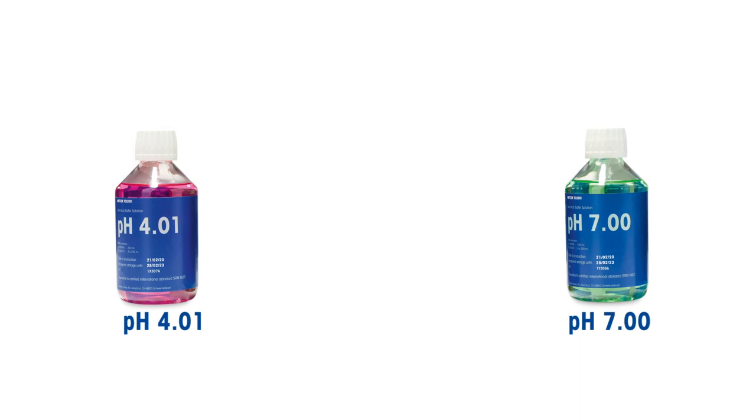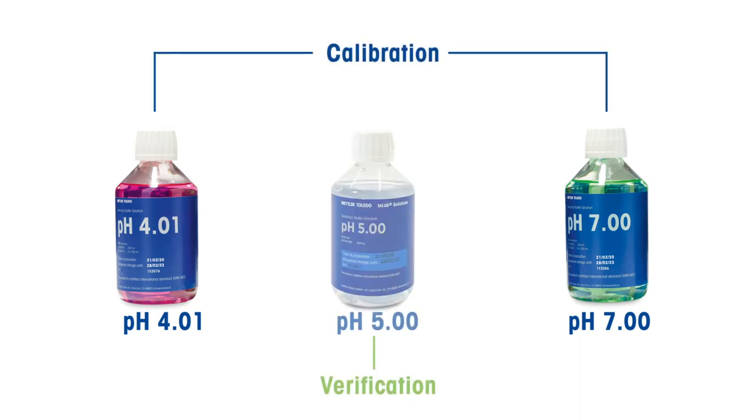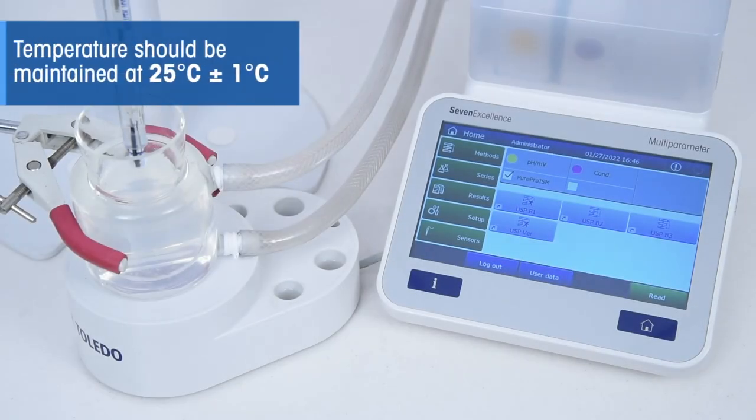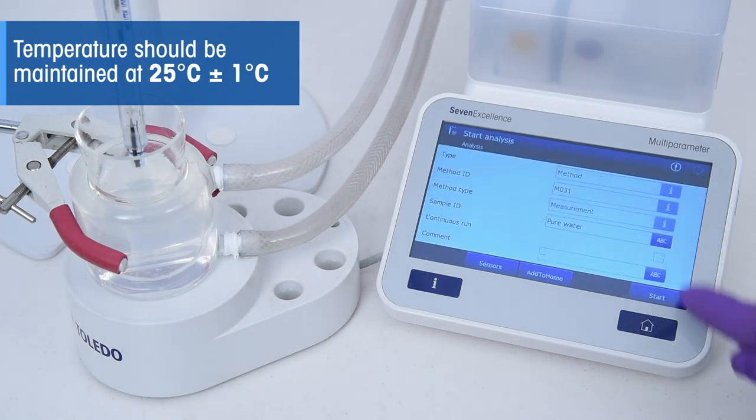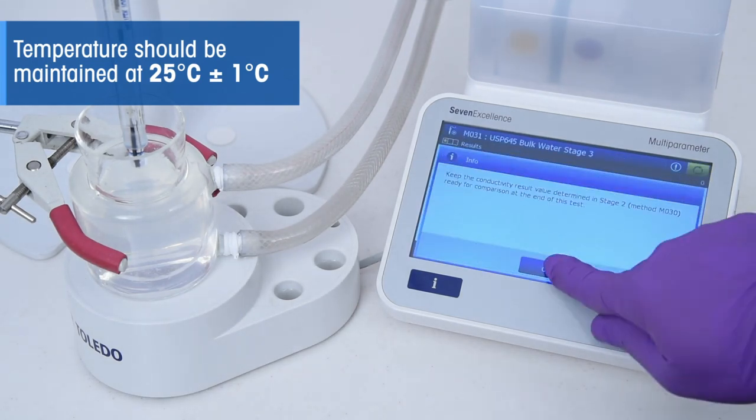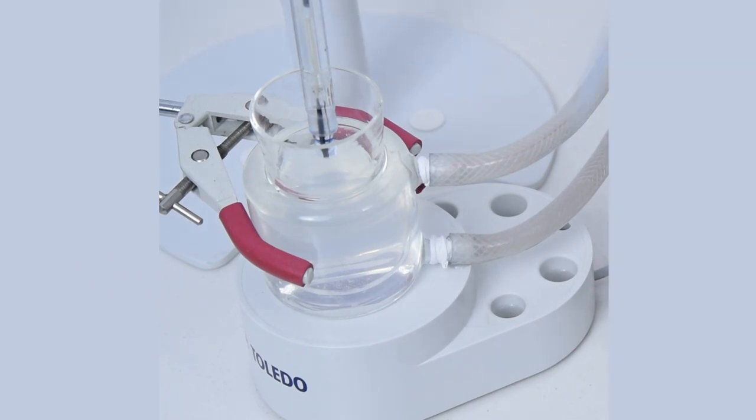For example, use pH 4.01 and pH 7.00 buffers for calibration, followed by a verification with an intermediate buffer, such as pH 5.00. Maintain the sample temperature at 25 degrees Celsius plus or minus 1 degrees Celsius and measure the pH after adding 0.3 milliliters of a saturated potassium chloride solution per 100 milliliters of sample.